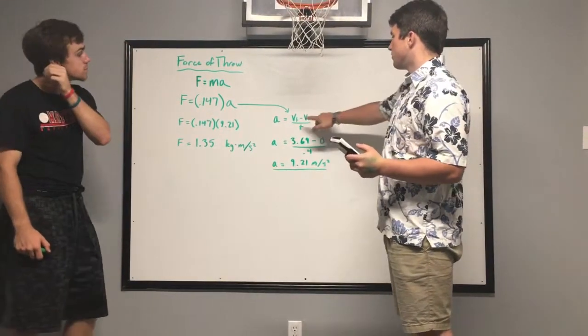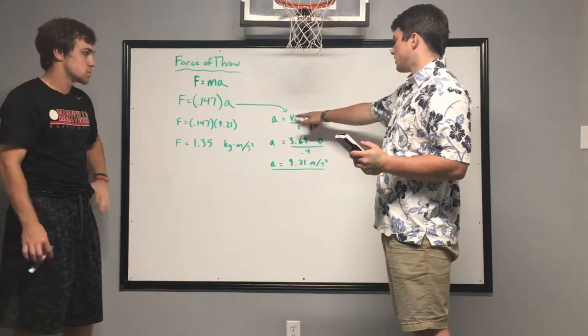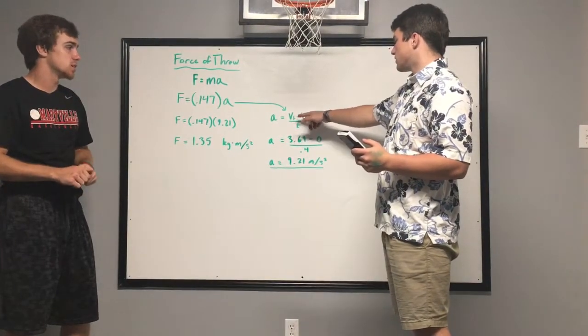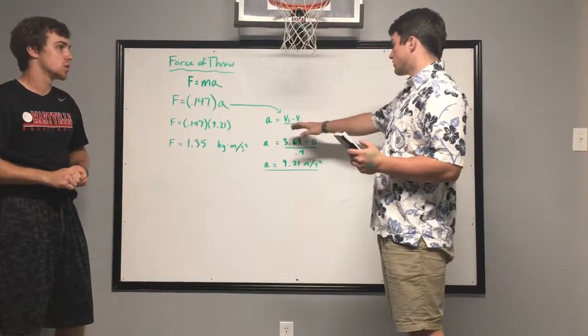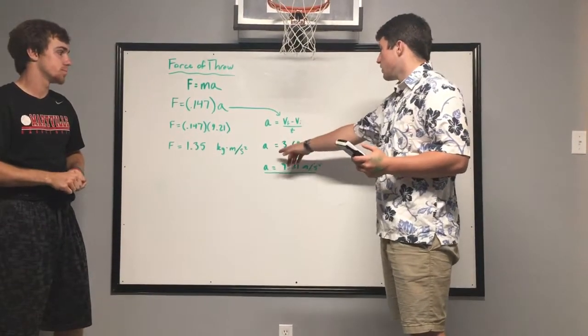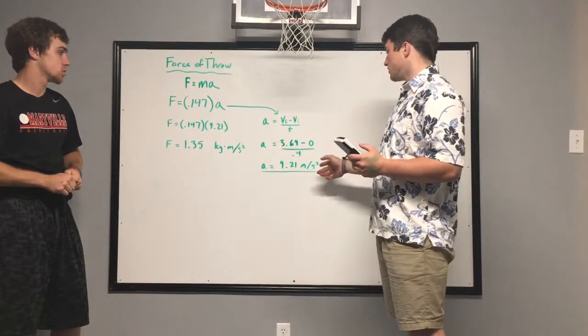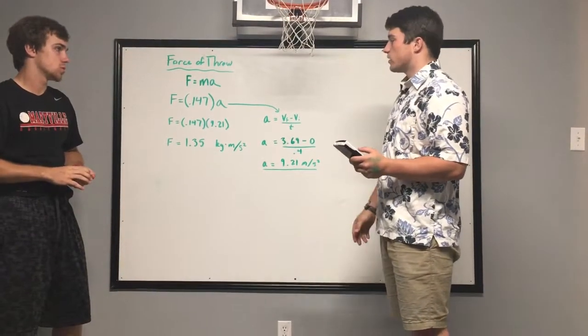So we found acceleration by doing the final velocity minus the initial velocity over time, or basically the change of velocity over time, change of speed over time. And we got the acceleration to be 9.21 meters per second squared.